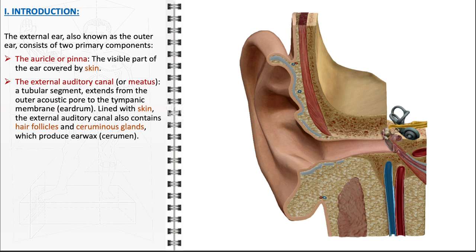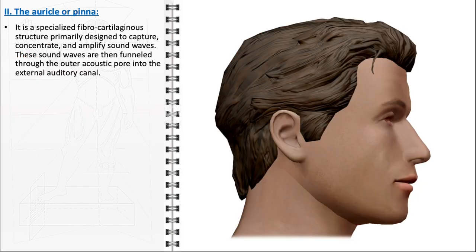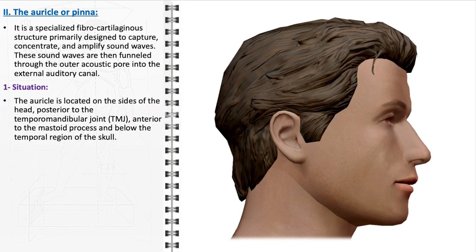Overall, the external ear is not just a passive structure but an active participant in the hearing process, efficiently capturing and guiding sound waves into the inner parts of the ear, while also providing a line of defense against external threats. The auricle, an integral component of the external ear, is a specialized fibrocartilaginous structure with a primary function to capture, concentrate, and amplify sound waves.